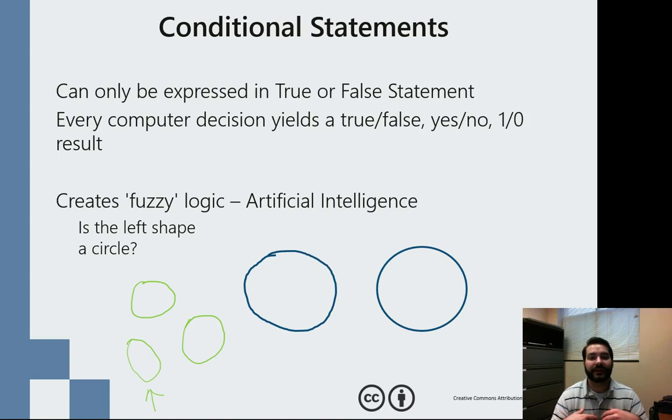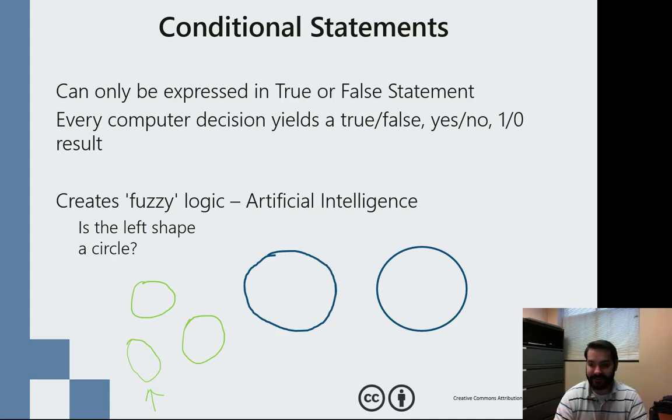And so conditional statements are actually the foundational blocks of what we call fuzzy logic or artificial intelligence in computer programming. Because, again, the computer is only going to be able to figure out if something is something if we tell it to. So just like we see on here, this one, close enough.